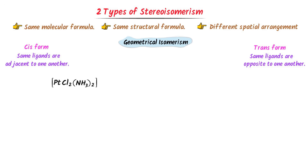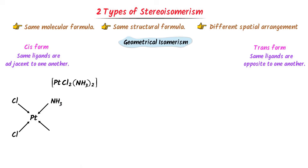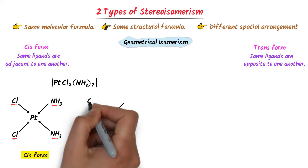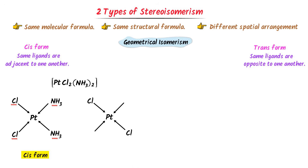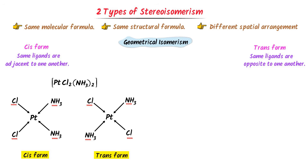Consider a platinum coordination compound with two chlorine ligands and two NH3 ligands. When the two chlorines are adjacent to each other and the two NH3 groups are also adjacent, that is the cis form. When the second chlorine is placed opposite to the first chlorine, and NH3 is placed opposite to the other NH3, that is the trans form. These two isomers are an example of geometrical isomerism.